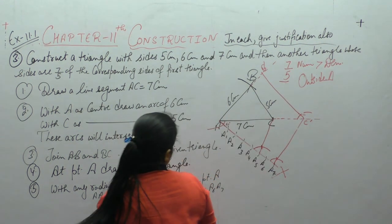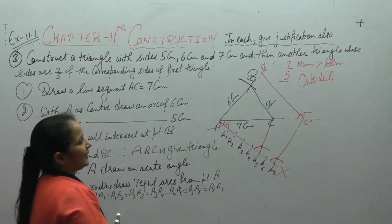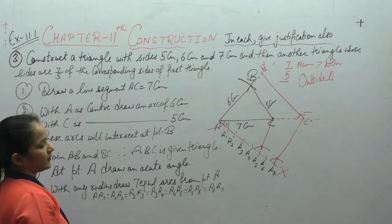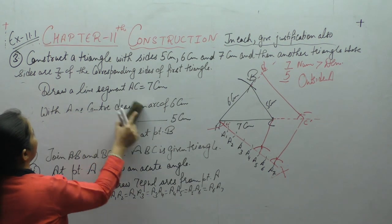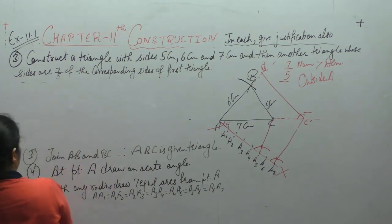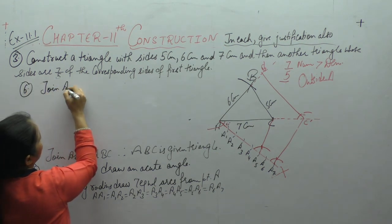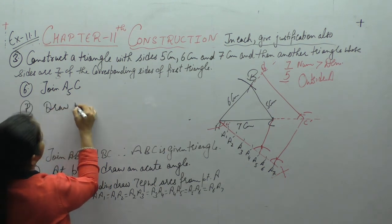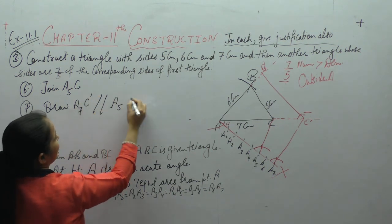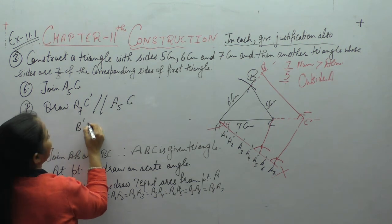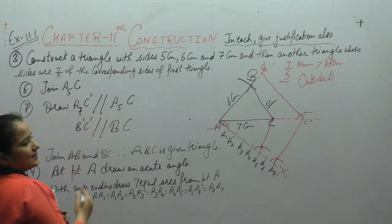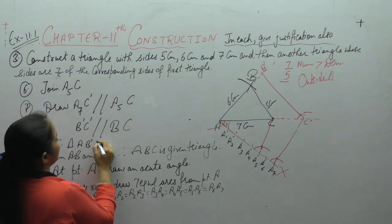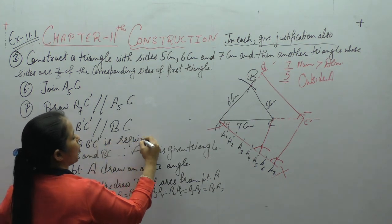Steps of construction: Join A5 and C. Draw A7C dash parallel to A5C, and draw B dash C dash parallel to BC. Therefore triangle A B dash C dash is the required triangle.